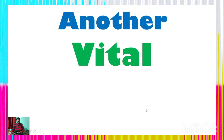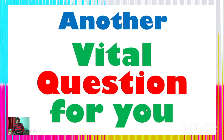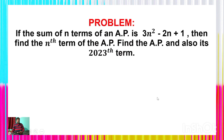Here is another vital and interesting problem — one of the hundred percent possible questions. If the sum of n terms of an AP is 3n² − 2n + 1, then find the nth term of the AP, find the arithmetic progression, and also find the 2023rd term of the AP.